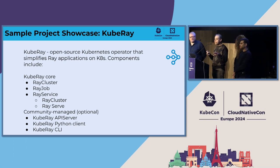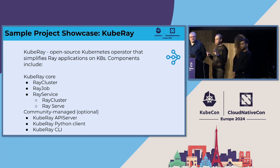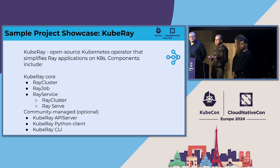One example project that presented is Kuberay, an interesting project in the AI space. It's composed of different parts: you have a core, a Ray cluster, a Ray job — that's the main part of the project. There are also community-managed optional components that are external, like the Kuberay API server, the Kuberay CLI, and the Python client.